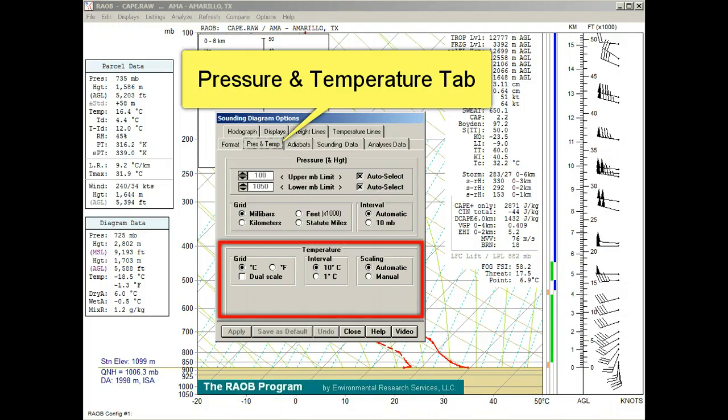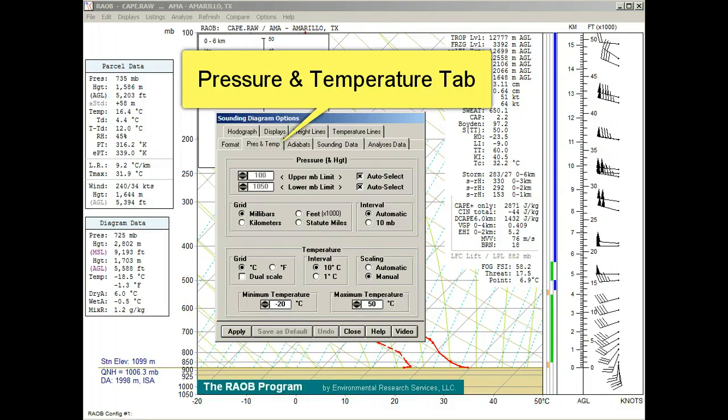The temperature section applies to the X axis labels, where the grid section offers Celsius or Fahrenheit scales, in addition to a dual scale mode. The interval section allows 10 degree or 1 degree grid spacing. The scaling section allows automatic or manual temperature adjustments.